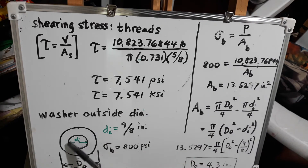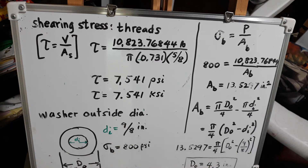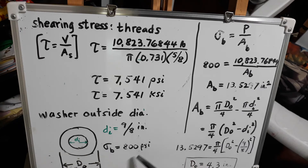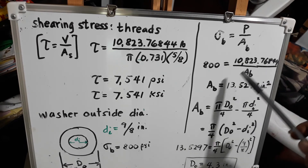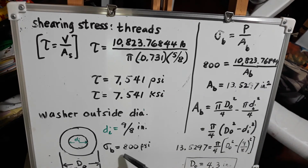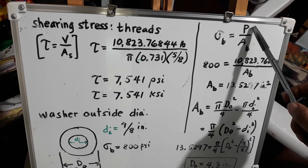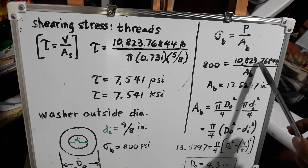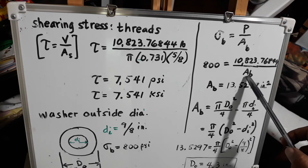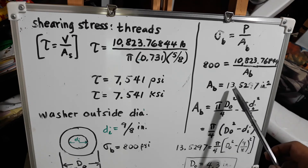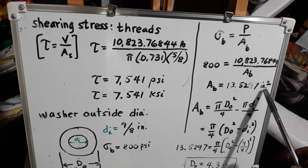For the washer, the inner diameter is given as 9/8 inch and the bearing stress is limited to 800 PSI. We need to find the outside diameter. Applying the bearing stress formula — bearing stress equals P over A — with bearing stress of 800 PSI and load of 10,823.77 pounds, we solve for the bearing area, which gives 13.5297 square inches.